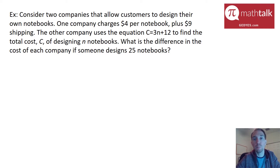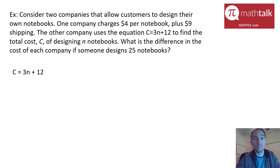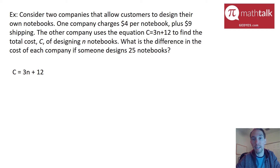This is a comparison problem, and what we need to do is compare the cost between two different companies with two different equations. One equation is given: C equals 3N plus 12. The other we need to create from the information given. They say it's $4 per notebook, represented by 4N, plus $9 shipping as a flat fee — so the cost is 4N plus 9.